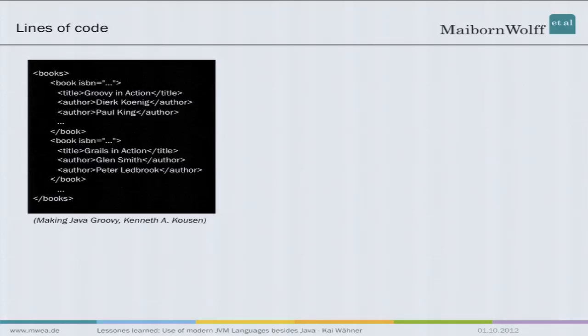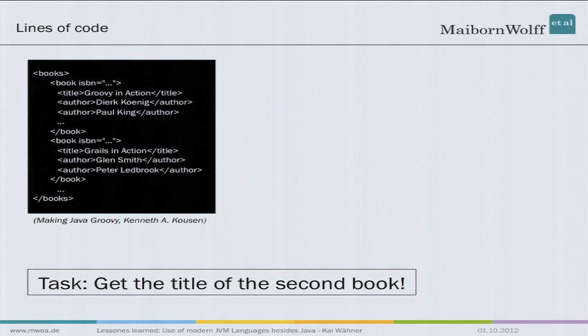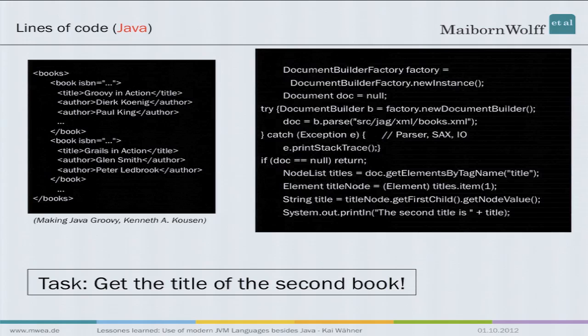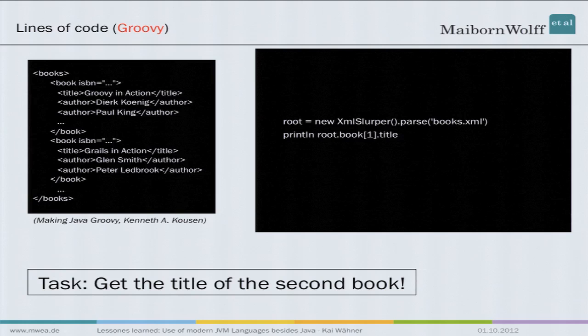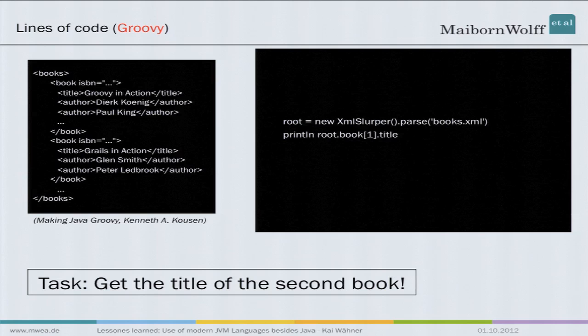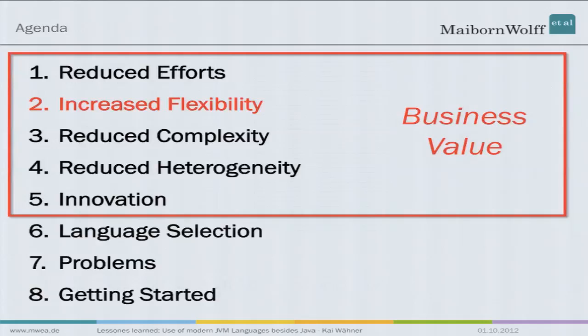A real example where we often use these new languages is XML processing, because it's really horrible to do in Java and there are better alternatives. Here's a little example: you have books with several books inside, and if you have to get the title of the second book using any Java API, you have to write a lot of boilerplate code. In Groovy, it's always just one or two lines to do the same XML processing. We have applications where we use the modern languages only for XML processing — you don't have to use these languages for all of your classes. You can use it for only some parts of your application, and XML processing is really a good choice.